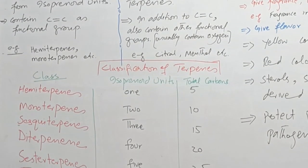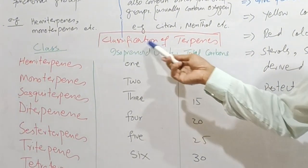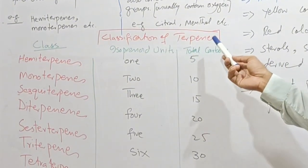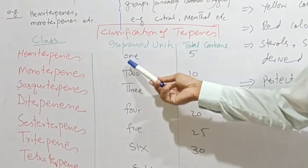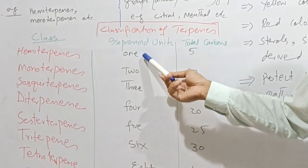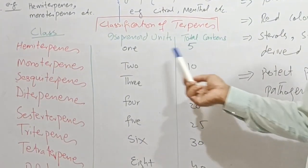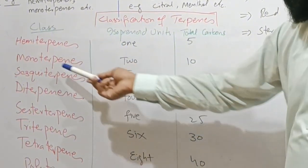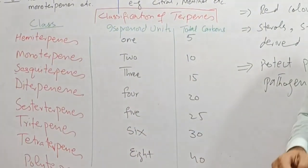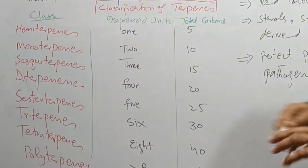First let's see the classification of terpenes. Terpenes are classified on the basis of presence of isoprenoid unit. If one isoprenoid unit is present and five carbon compound, this terpene is called as hemiterpene. Monoterpene contain two isoprenoid unit and ten carbon. Sesquiterpene contain three.